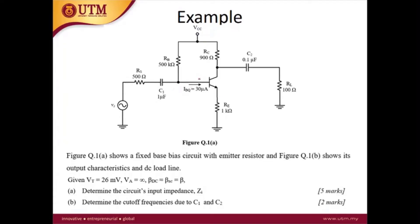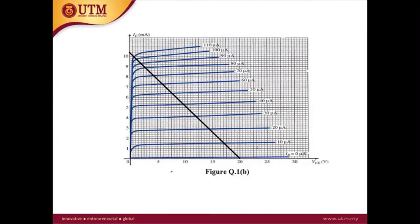In this last video we will discuss one example taken from a past year test. This is a common emitter configuration without the bypass capacitor at the emitter. Besides this circuit, the output characteristic and DC load line are also given in the question. The black solid line is the DC load line on the IC versus VCE characteristic.